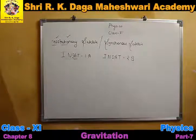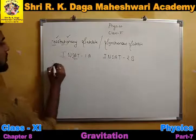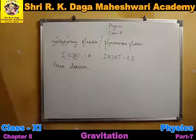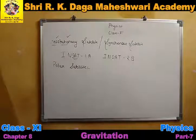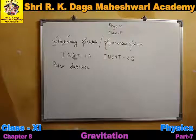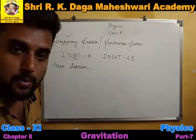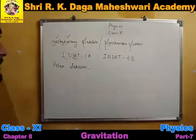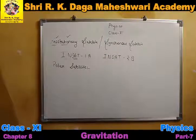The next topic is polar satellites. From the name, we can understand something which is related to the poles of the Earth. A polar satellite is one that revolves in the polar orbit around the Earth — the orbits near the Earth's poles. Such satellites are called polar satellites. A polar satellite has an angle of inclination of 90 degrees with the equatorial plane of Earth, and it passes over both the north and south geographic poles once per orbit.